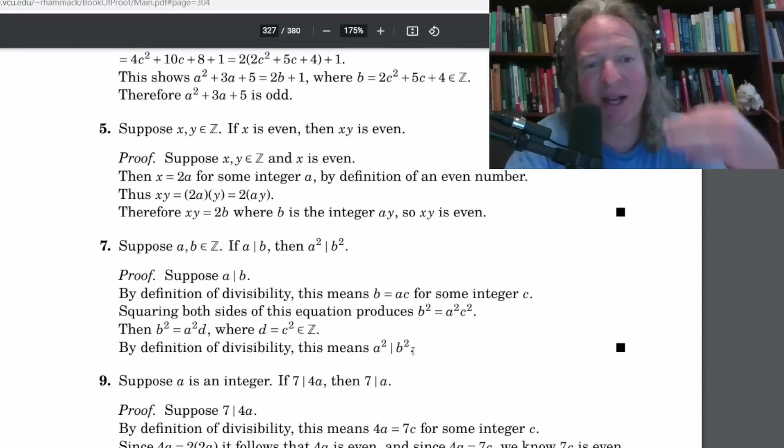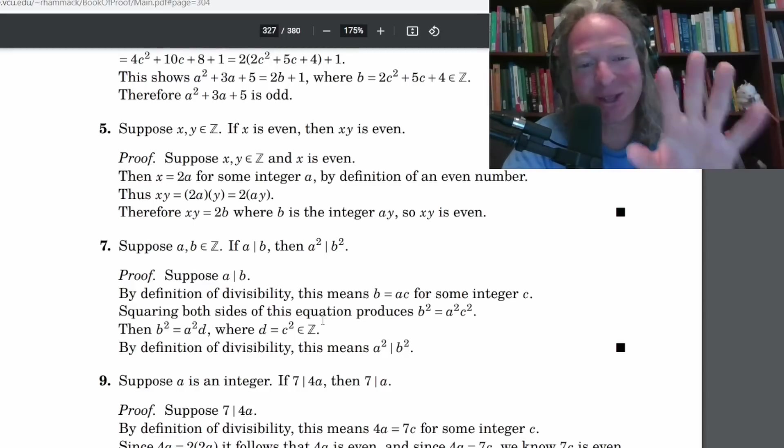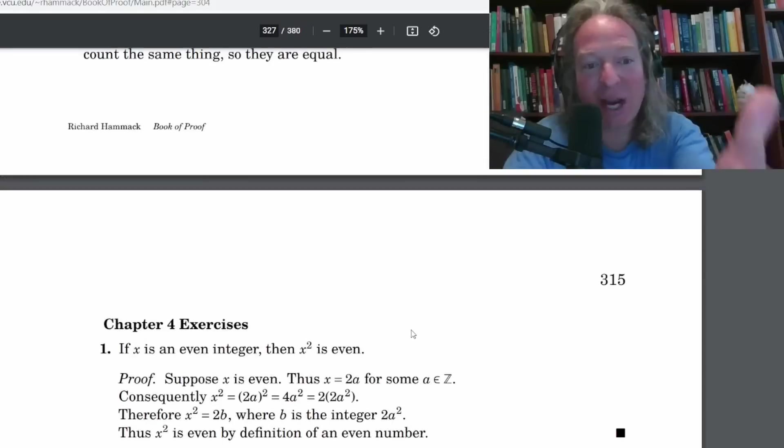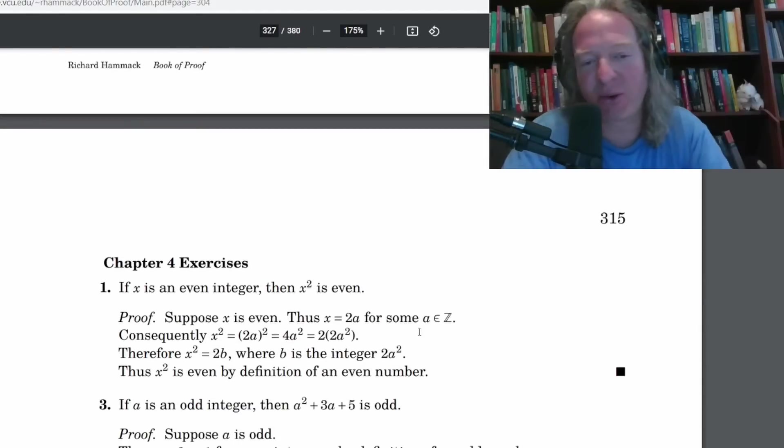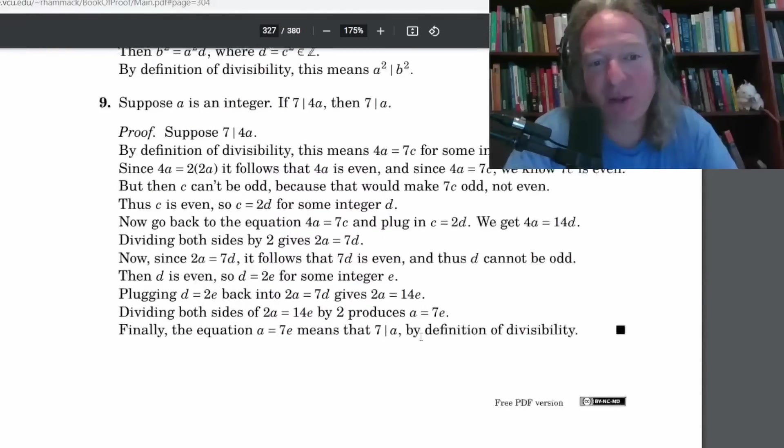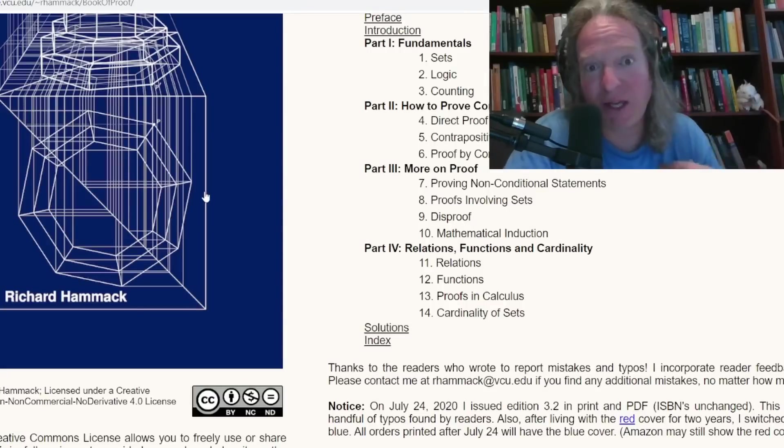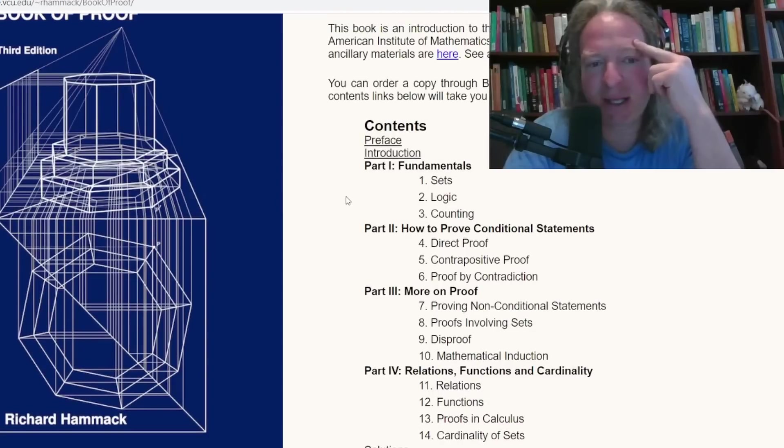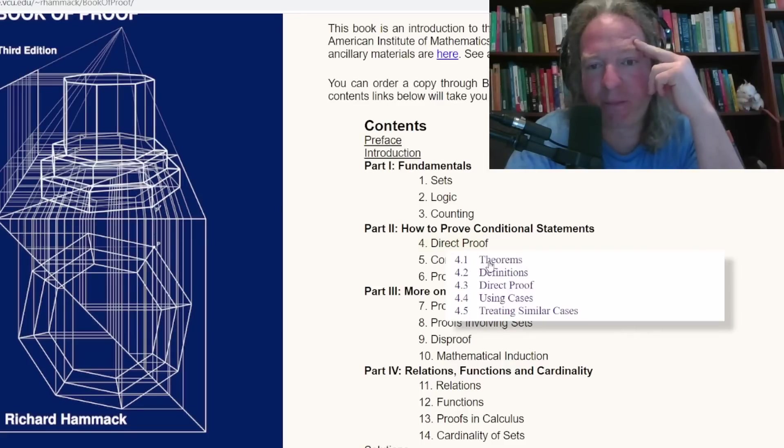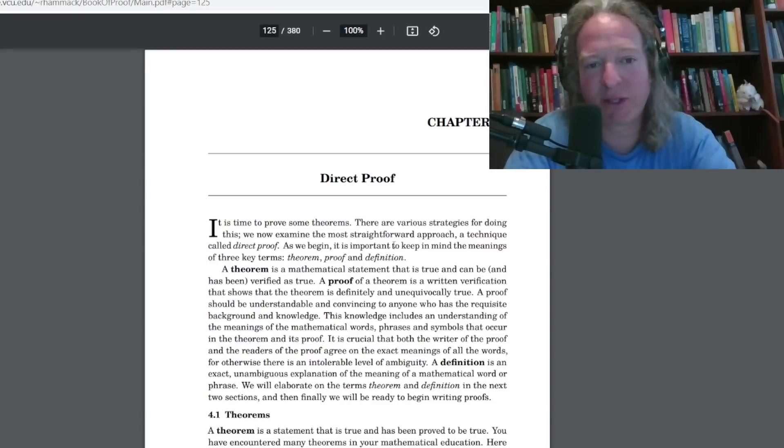So b squared equals a squared times d where he has set d equal to c squared. So d is an integer. In other words, b squared is a multiple of a squared. That means that a squared divides b squared. These are really well written proofs. And again if you're one of those people like me who sometimes thinks if it's free it's probably not that good, not the case. This book is fabulous.